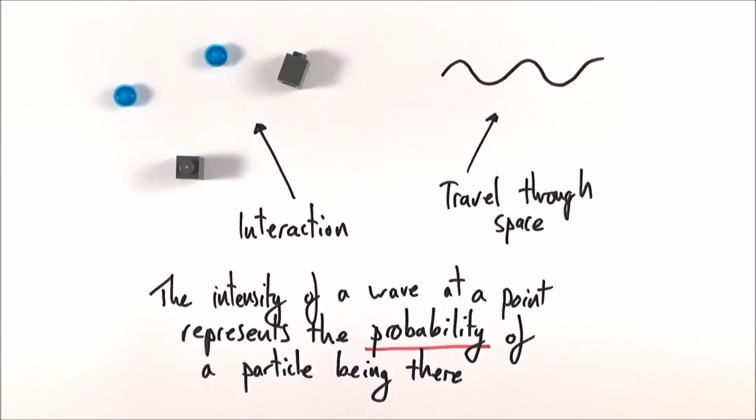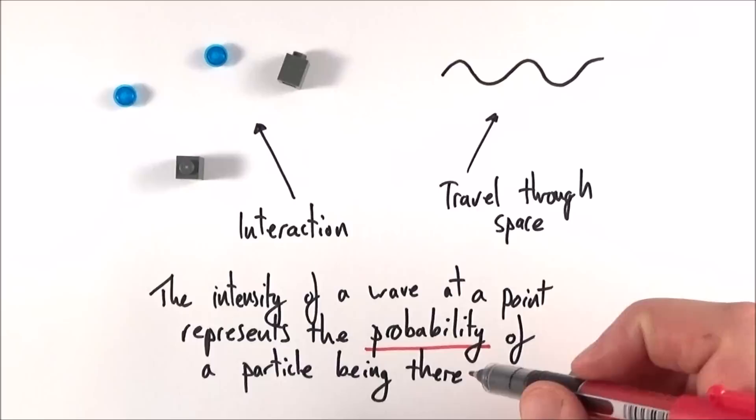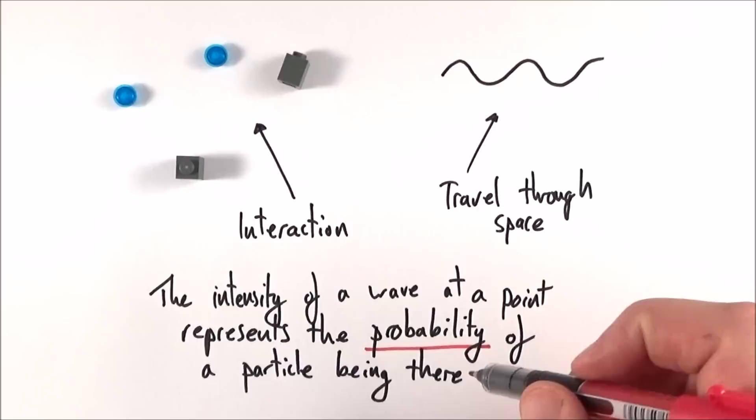And this word probability is quite important. Another work done by Heisenberg, by Schrödinger, by Dirac—all these scientists you may have heard of—stems from the work that de Broglie did in about 1924, where he described the wave-like properties of things that we'd always until then considered as a particle.